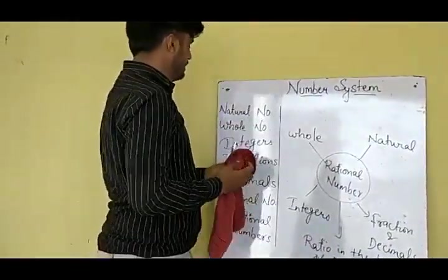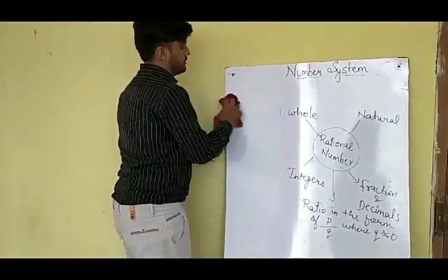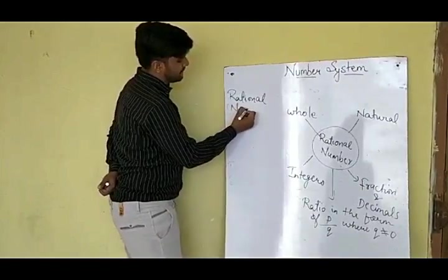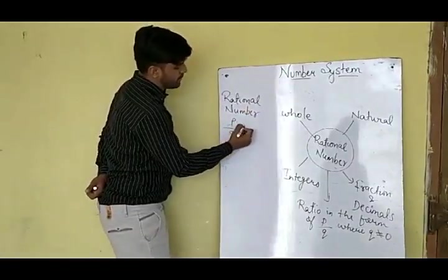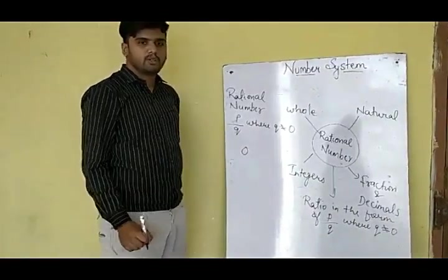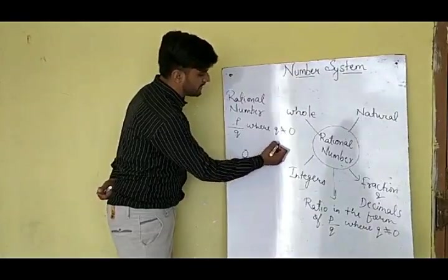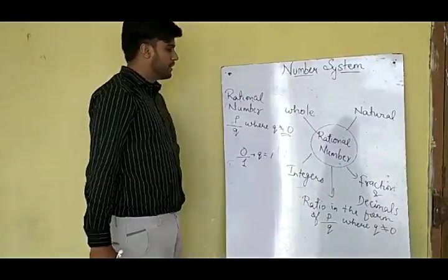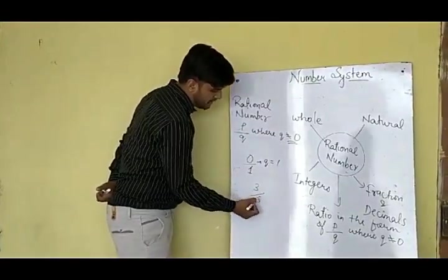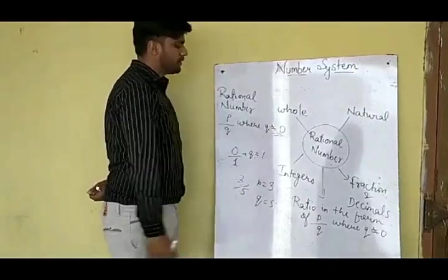We will take some examples of rational numbers. Is 0 a rational number? Yes, it is a rational number because I can write 0 as 0 upon 1. Here the value of q is equal to 1, which is not equal to 0. Therefore it is a rational number. We can take any whole number, natural number, integer, or fraction. For example, 3 upon 5: here p equals 3 and q equals 5, so again it is a rational number because the value of q is not equal to 0.